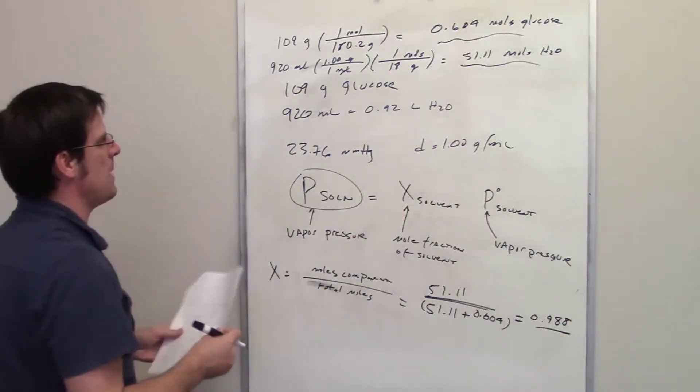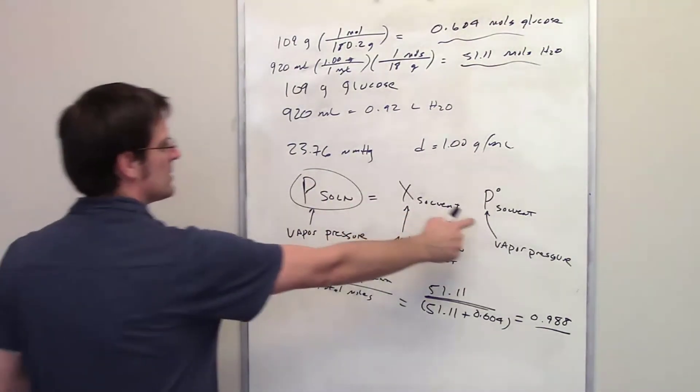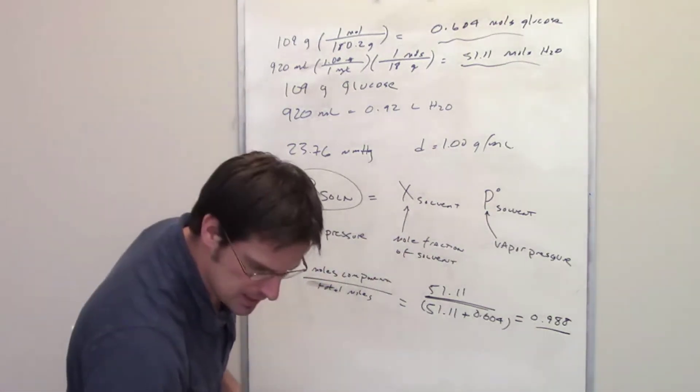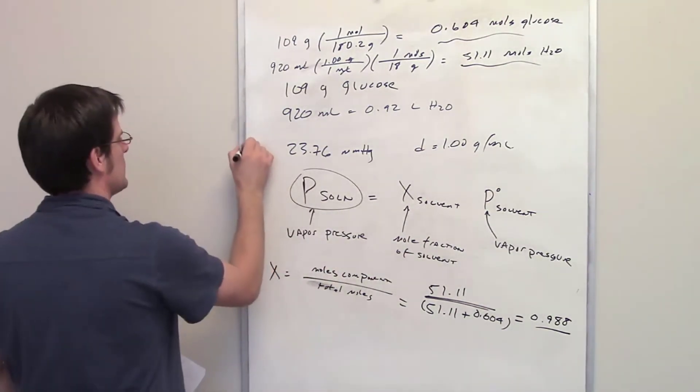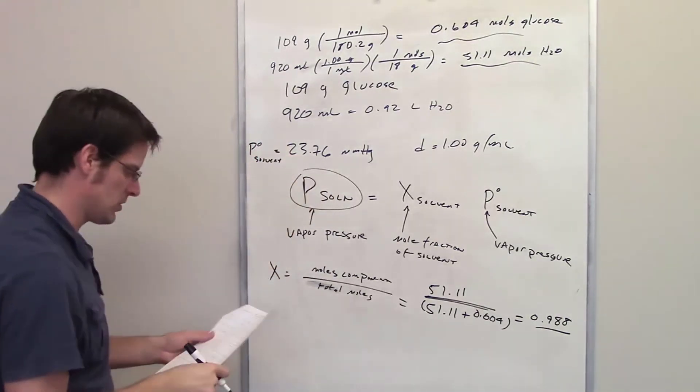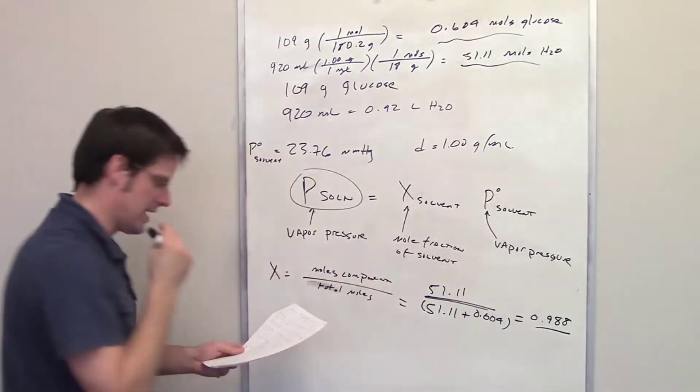The rest of it is not too bad because it tells us what the vapor pressure is for pure water in this problem at this temperature. This P solvent is 23.76 millimeters of mercury. So we have that, and we have now the mole fraction.